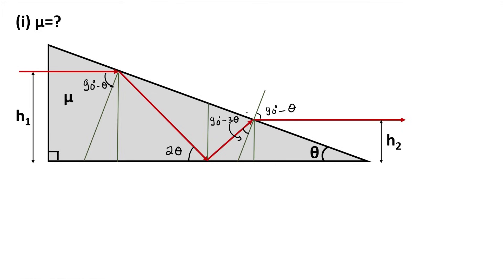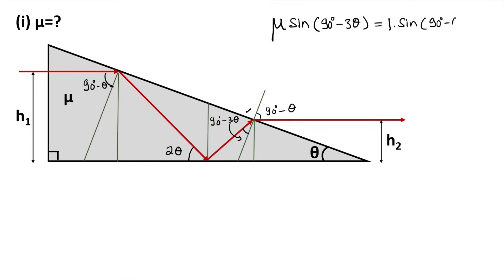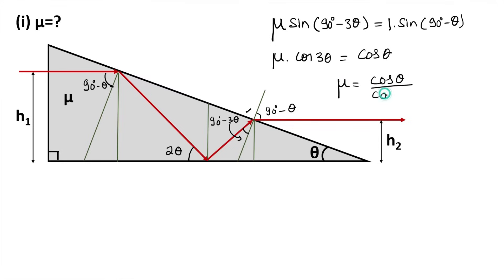Applying Snell's law at the surface: mu times sine of the angle of incidence, sine(90° − 3θ), is equal to 1 times sine of the angle of refraction, sine(90° − θ). So that gives mu·cos3θ = cosθ, therefore mu = cosθ / cos3θ. That is the value of mu.